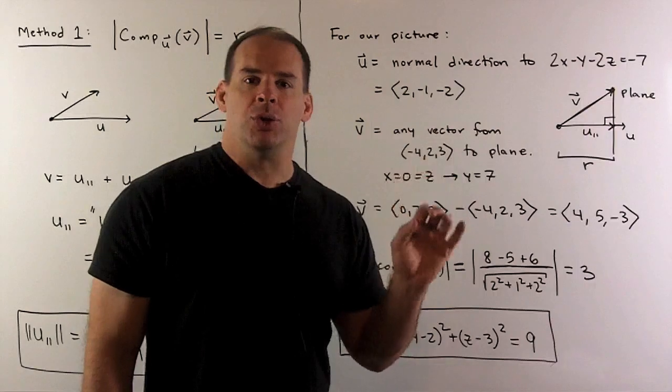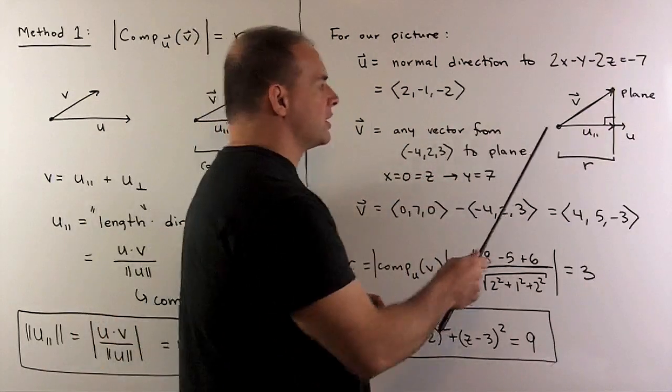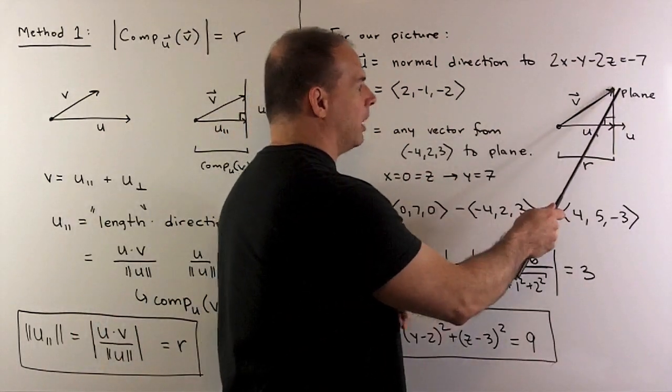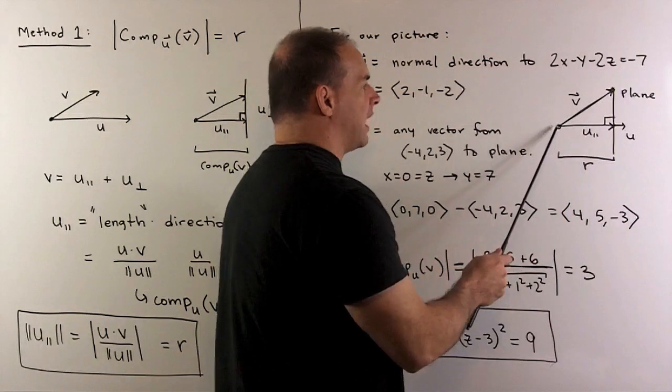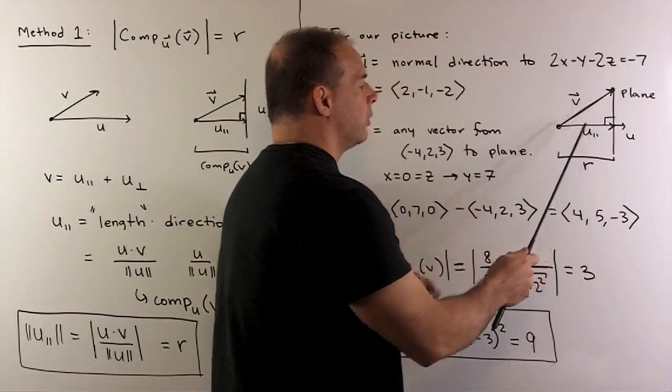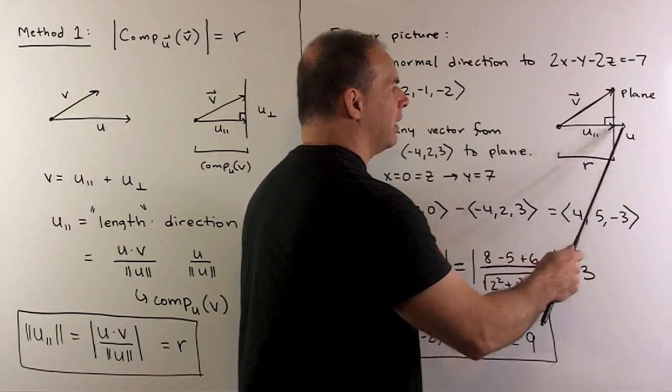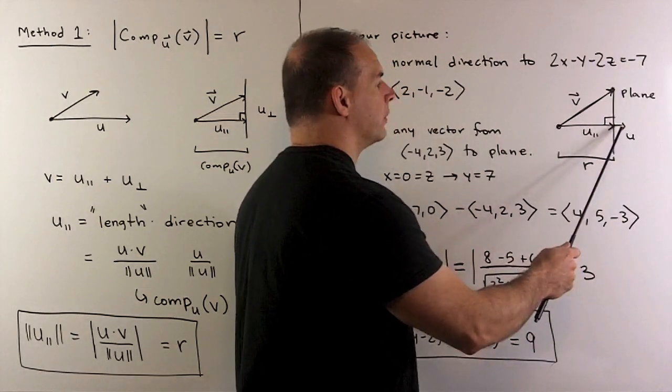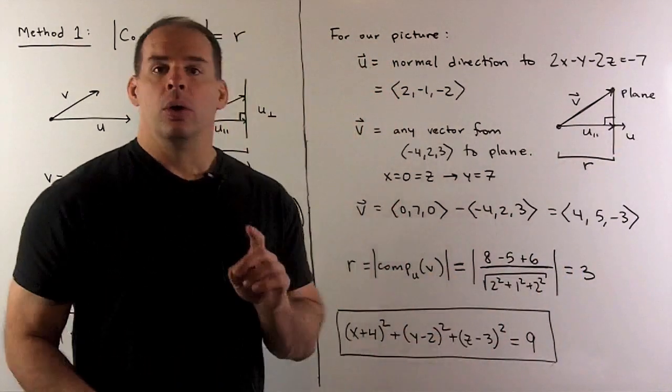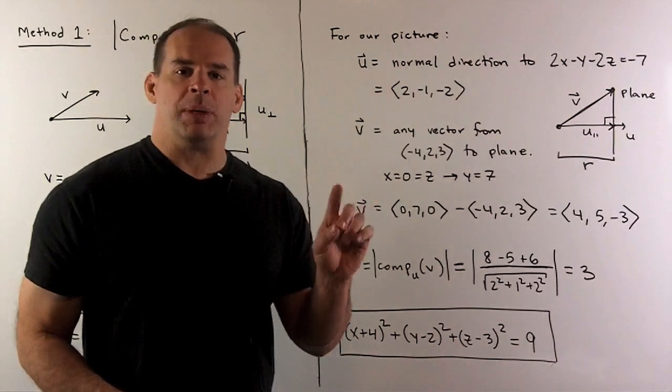For v, I can use any vector that starts at the center of the sphere and ends on the plane. So you'll note, if I take any vector of this form, the direction that's parallel to u is always going to be this segment here. So with that freedom, let's let x = 0, z = 0.